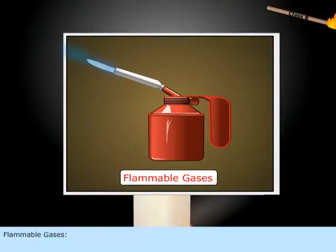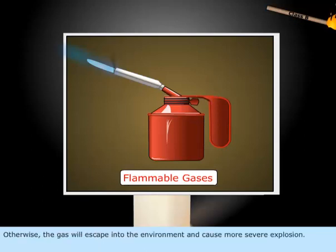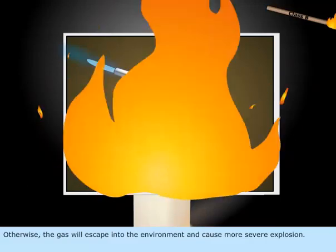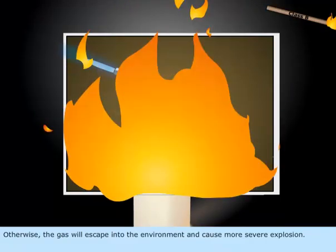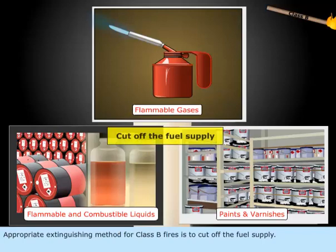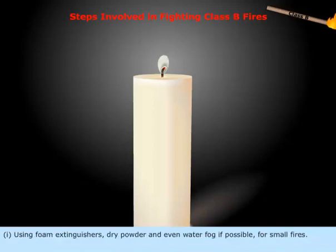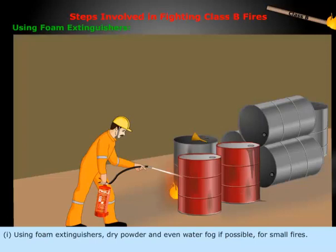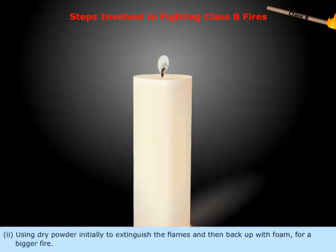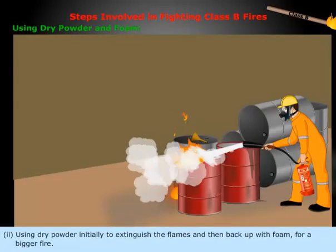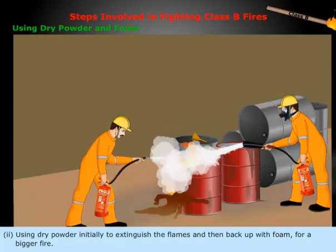Flammable gases: isolate the fuel supply. Otherwise, the gas will escape into the environment and cause a more severe explosion. The appropriate extinguishing method for Class B fires is to cut off the fuel supply. Fighting Class B fires depends upon different situations, but the general steps involve using foam extinguishers, dry powder, and even water fog if possible for small fires. Use dry powder initially to extinguish the flames and then back up with foam for a bigger fire.